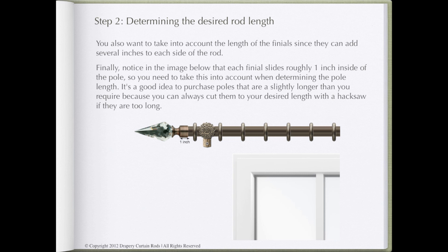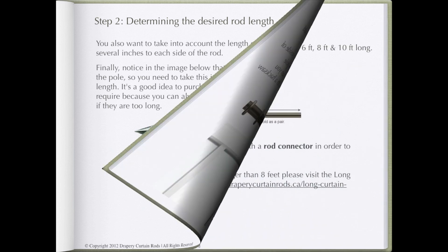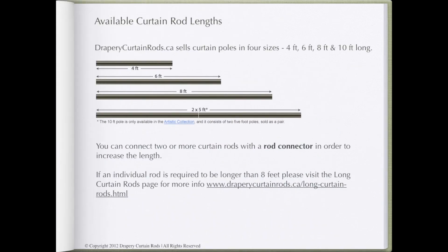It's a good idea to purchase poles that are slightly longer than you require, because you can always cut them to your desired length with a hacksaw if they're too long. DraperyCurtainRods.ca sells curtain poles in four sizes: 4 foot, 6 foot, 8 foot, and 10 foot long.